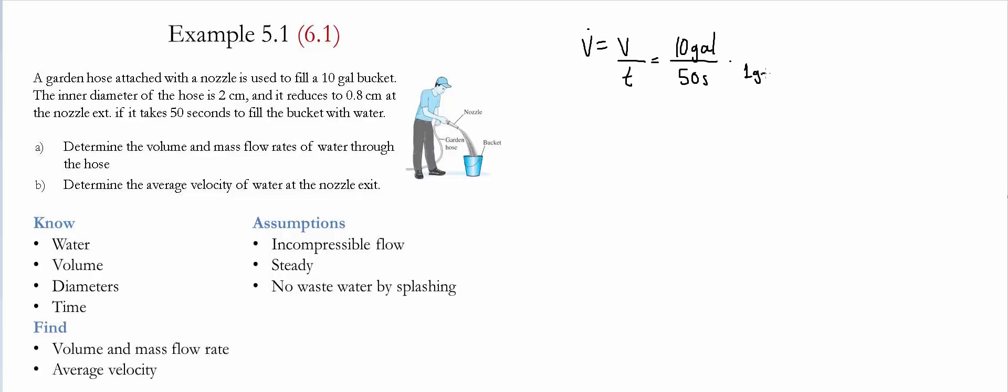We know that one gallon equals 3.7854 liters, and a thousand liters are in one meter cubed. If we do this multiplication, we find that the quantity is 7.57 times 10 to the negative 4.